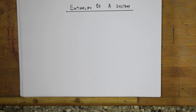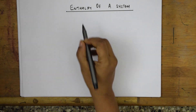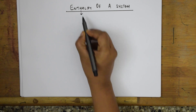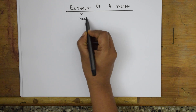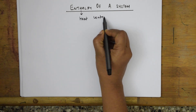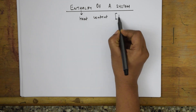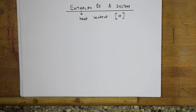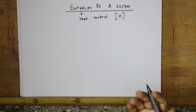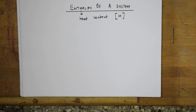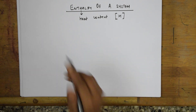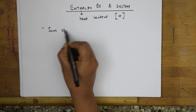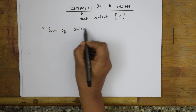Before going to the topic, let us see what enthalpy actually is and how it is denoted. Enthalpy, or the heat content of the system, is denoted by capital H. If someone asks me to define enthalpy, I will simply say enthalpy is nothing but the sum of internal energy.